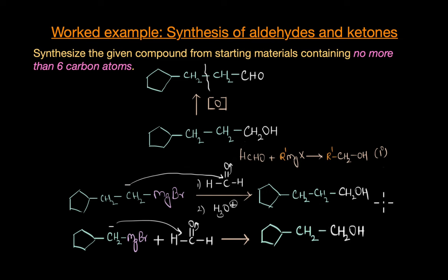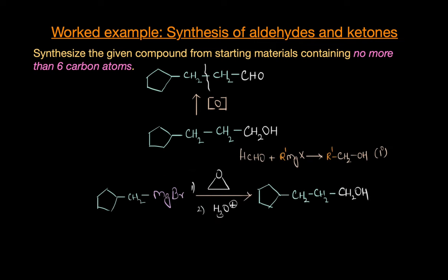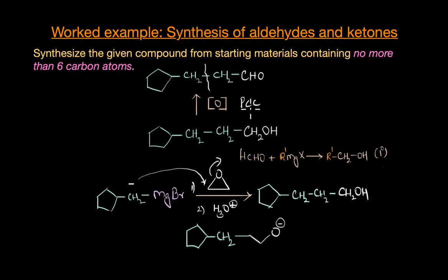Instead, we can use the six-carbon Grignard reagent with a reagent called oxirane. The nucleophilic attack opens the highly constrained oxirane ring, giving an intermediate which on acidic hydrolysis yields the desired primary alcohol. This alcohol can then be easily oxidized to the corresponding aldehyde using a simple oxidizing agent like PCC.